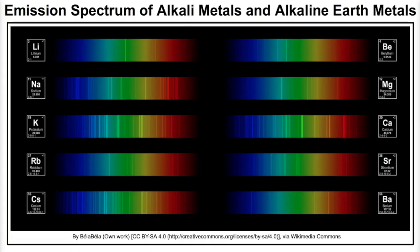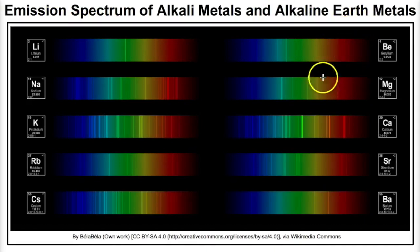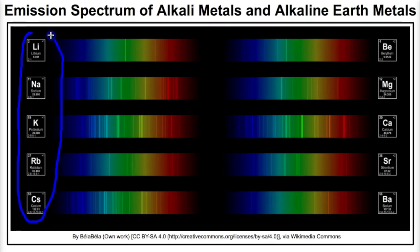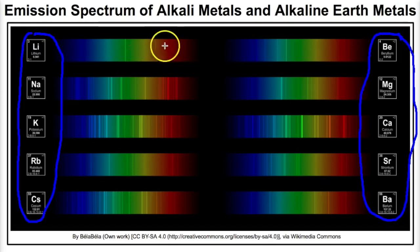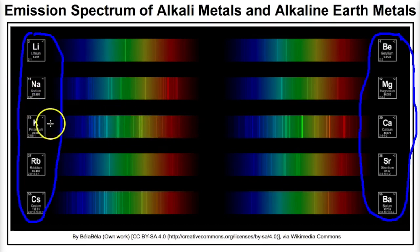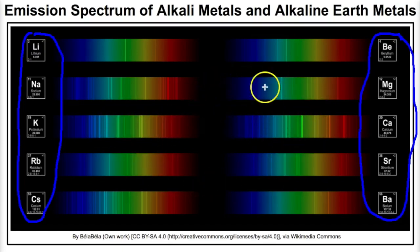Go ahead and pause this video to take a look at the emission spectrums of alkali metals and alkaline earth metals — from lithium down to cesium, and beryllium down to barium. For example, lithium emits green, red, and orange photons. Sodium emits many different photons of light. Potassium also emits various photons as its atoms go from an excited state back down to a ground state.